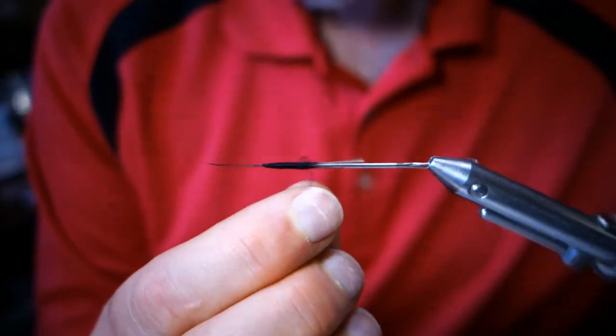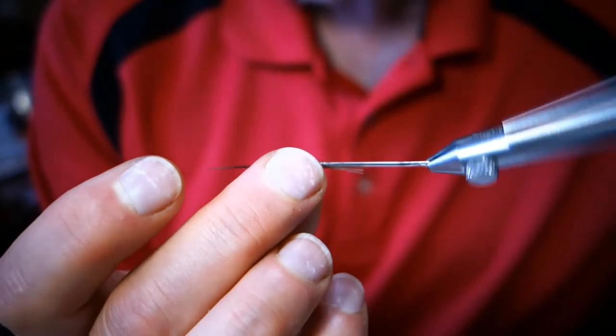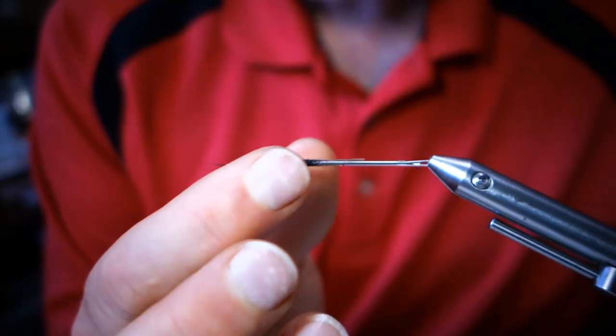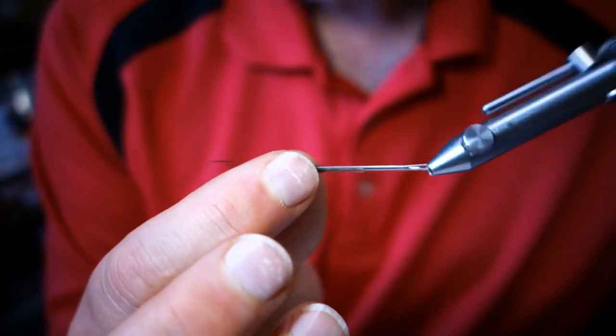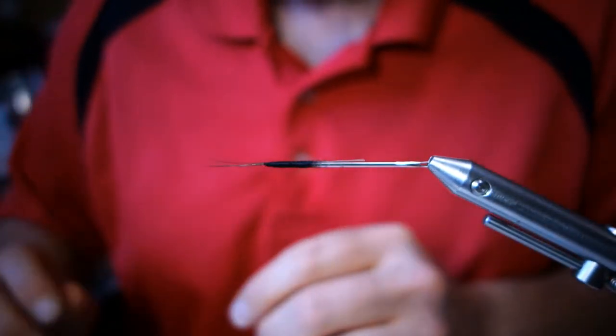Now you can use the same process to make caddis fly bodies, stone fly bodies, any type of body you want. The great thing is when you're done it's hollow, flexible, and strong. I've been tying these since the early 90s.